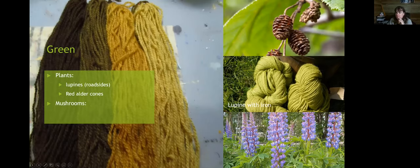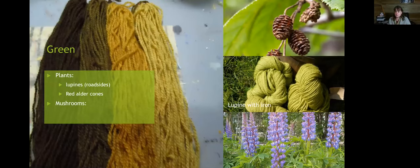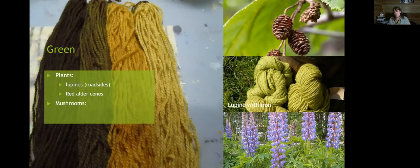You can get iron mordants online — ferrous sulfate as a powder. There are also plants with high aluminum and iron content, so if you're hardcore you can forage for your mordants, but that takes a lot of time. Some people use rusty nails, but you've got to be careful — too rusty chews up your yarn, not enough and it won't dye properly. It's a more interesting way to go though.